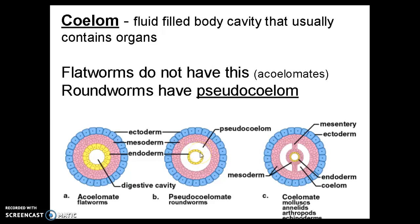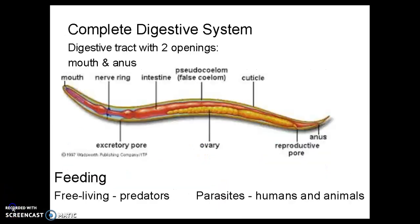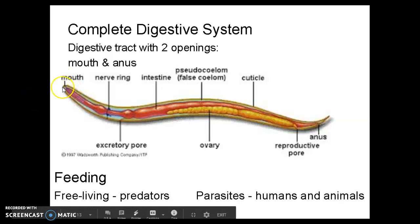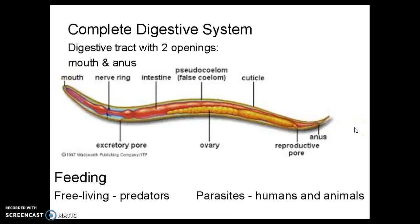Roundworms do still have that separation between the outer body covering and the inner lining of the digestive system. The other notable thing about roundworms is that we finally see a complete digestive system in the animal kingdom — a digestive tract with two openings, a mouth and an anus. Before, when we looked at cnidarians and platyhelminthes, there was only one opening that served for food to enter and waste to exit. Now we have a place where food enters through the mouth and waste exits through the anus. Roundworms are predators and parasites to both humans and other animals.